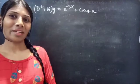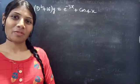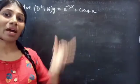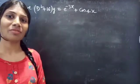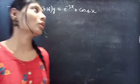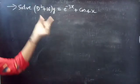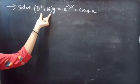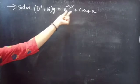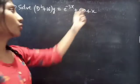Hello everyone, this is Zia Kalpana here. In this video we are going to solve a differential equation from higher order linear differential equations. So let's get going. Problem: Solve (D² + 16)y = e^(−3x) + cos(4x).